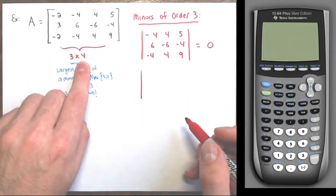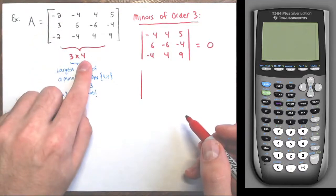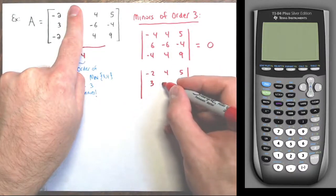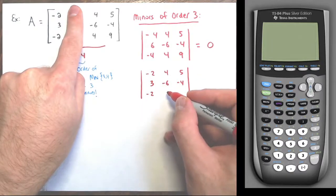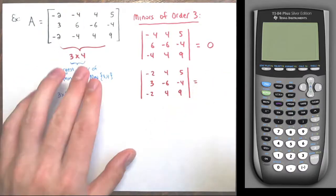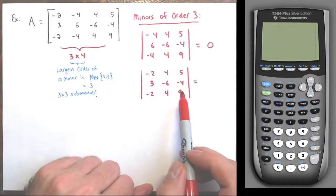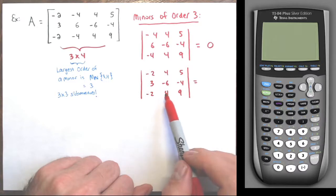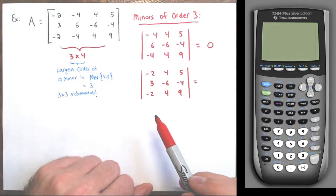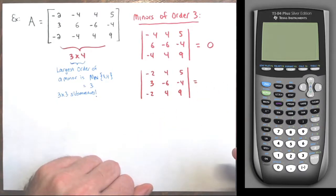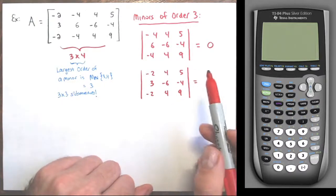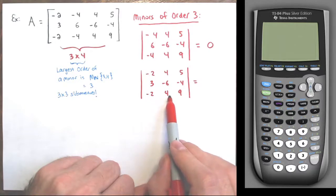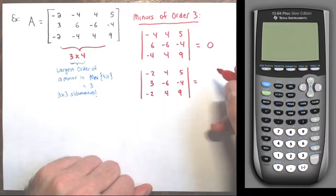Removing the second column gives another three by three submatrix. Again the first two columns are scalar multiples: multiply the first column by negative two and you get the second column, so the determinant of this three by three matrix is zero. Removing the third column gives another submatrix — negative two, negative four, five; three, six, negative four; negative two, negative four, nine. Look at the first two columns again: multiply the first column by two and you get the second column, scalar multiples, so determinant is definitely zero.